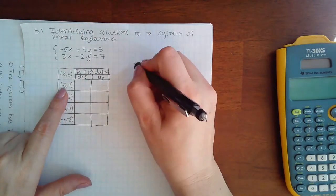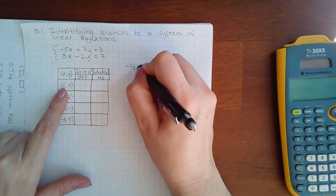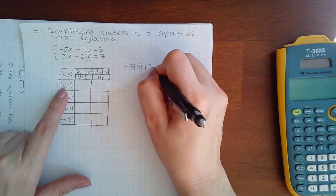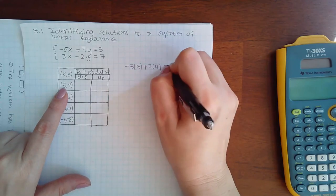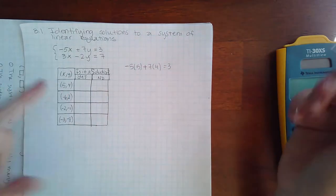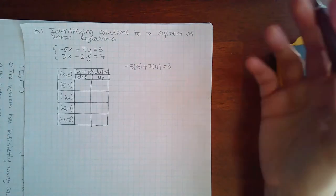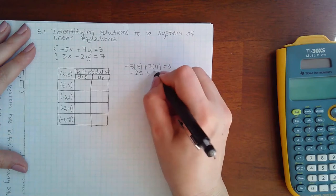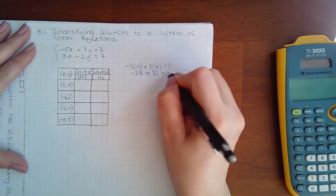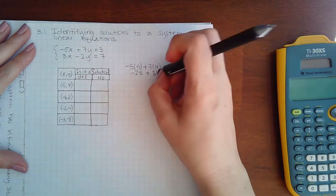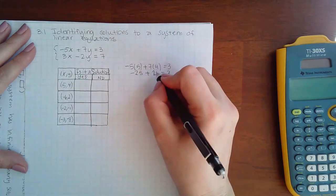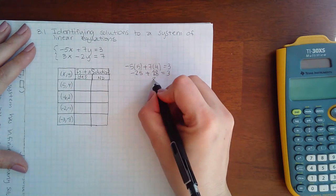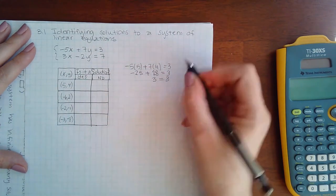What I'm going to do is plug in the x coordinate for x and the y coordinate for y in the top equation and see if I get an equality. So here I get negative 25 plus 28, and if I simplify that, that is positive 3 equal to positive 3.